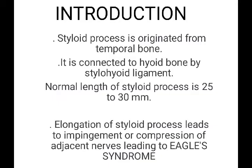Hello everyone, welcome to Dental World. In this video we will learn about Eagle syndrome, so let's get started. The styloid process originates from the temporal bone and is connected to the hyoid bone by the stylohyoid ligament. The normal length of the styloid process is 25 to 30 mm. Elongation of the styloid process leads to impingement or compression of adjacent nerves, leading to Eagle syndrome.